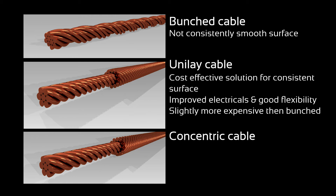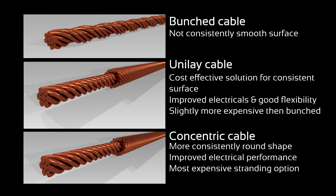In the concentric strand, it is still built to a specific geometry, but we alternate the lay direction between layers. This provides more structure for the overall cable, and the final product has an even more consistently round shape. A concentric strand has even better electrical performance in data cables, but it is the most expensive of our stranding options.